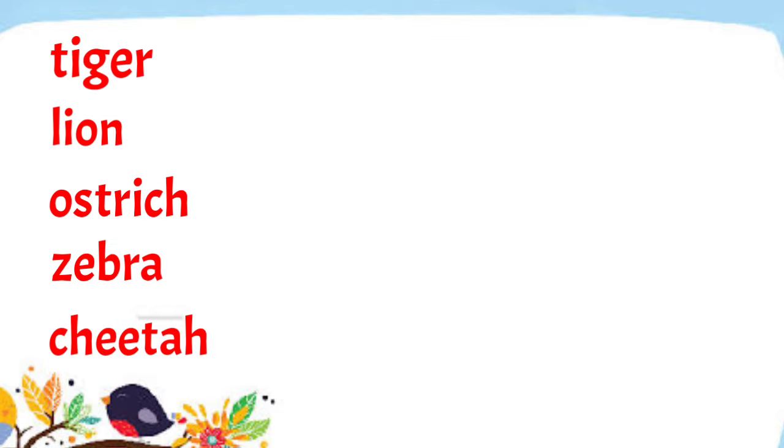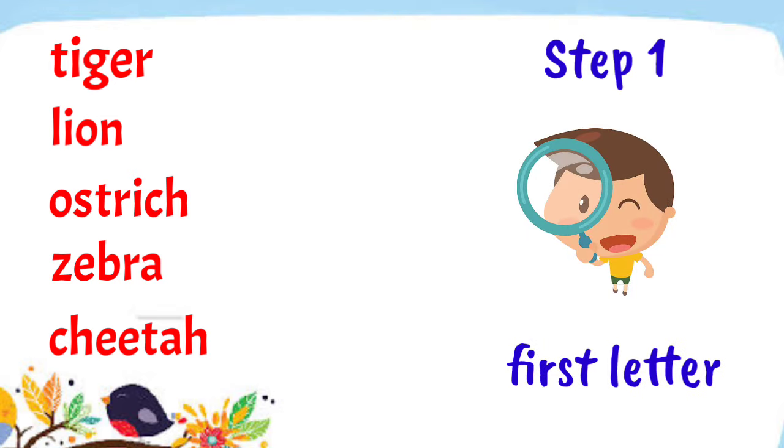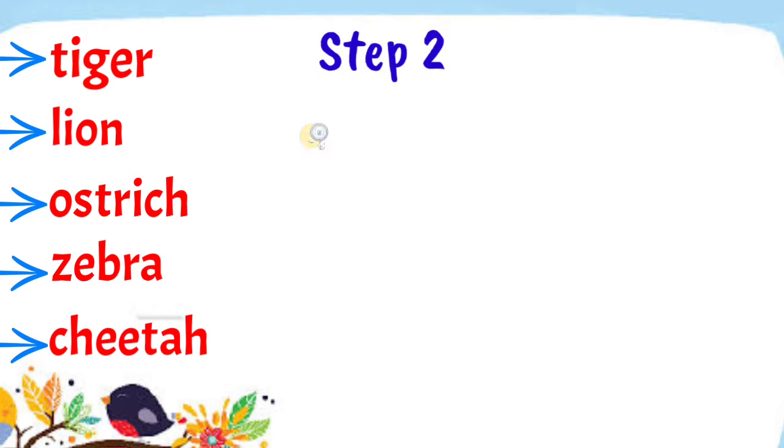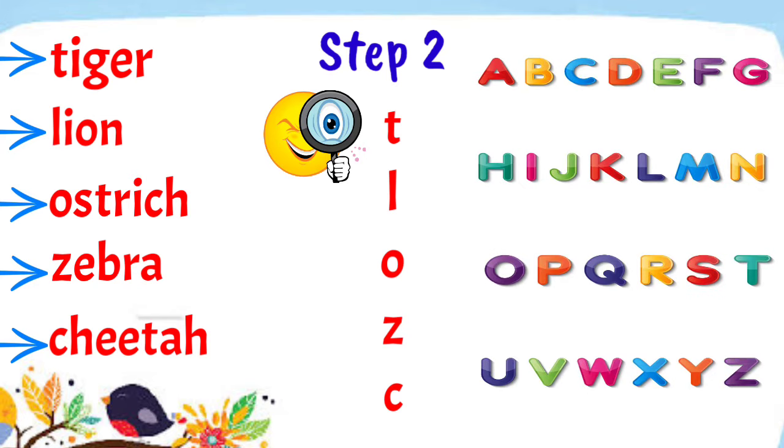The first thing that we should do is to look at the first letter of each of these words. T for Tiger, L for Lion, O for Ostrich, Z for Zebra, and C for Cheetah. Next, we have to identify which of these letters appears first in the alphabet, then the second one, the third one, and so on.